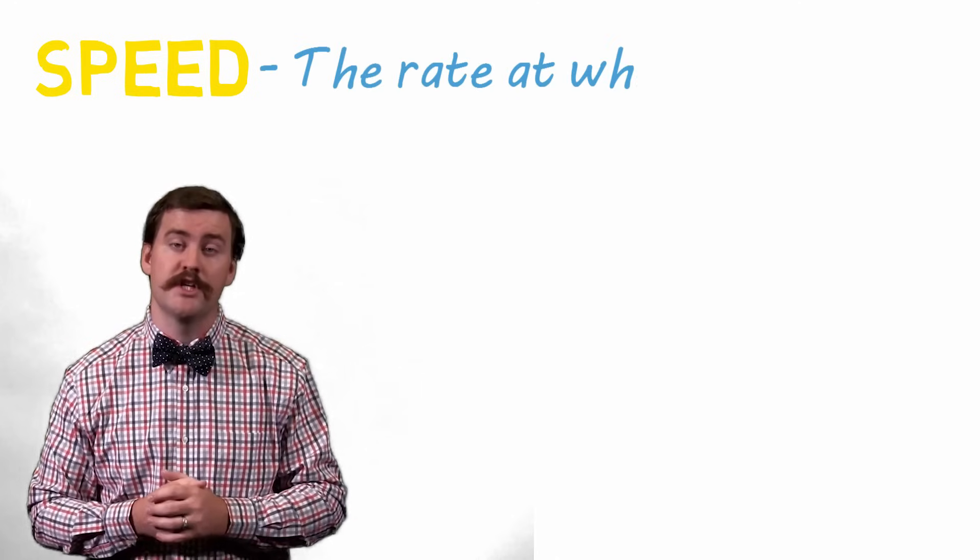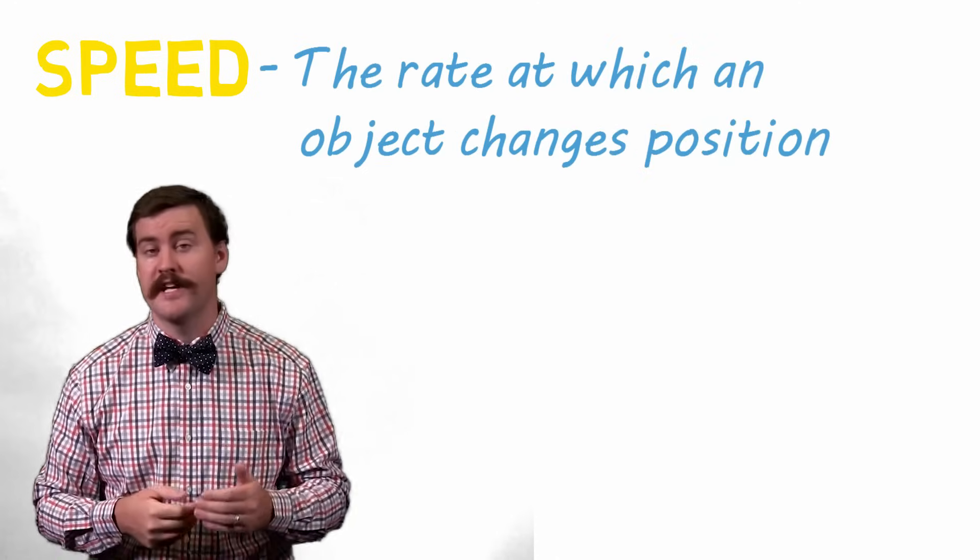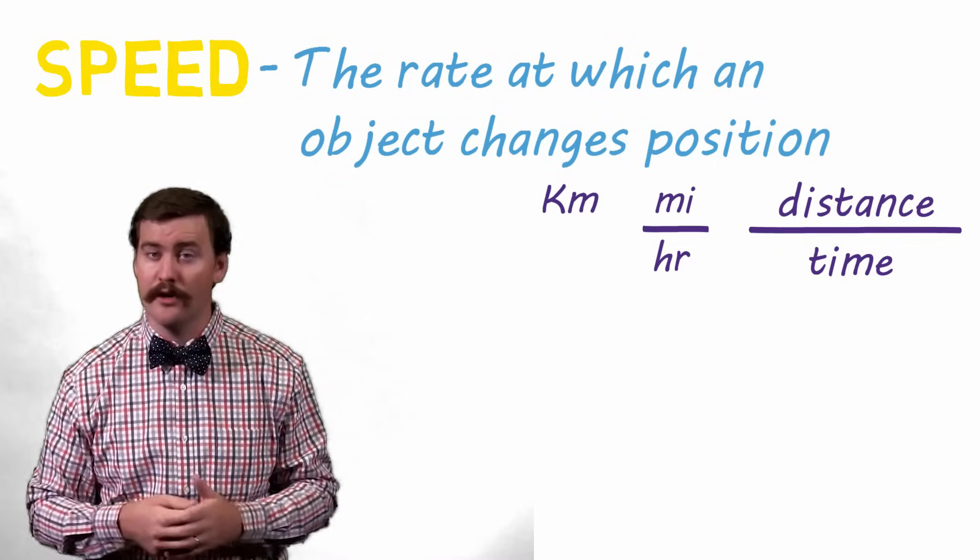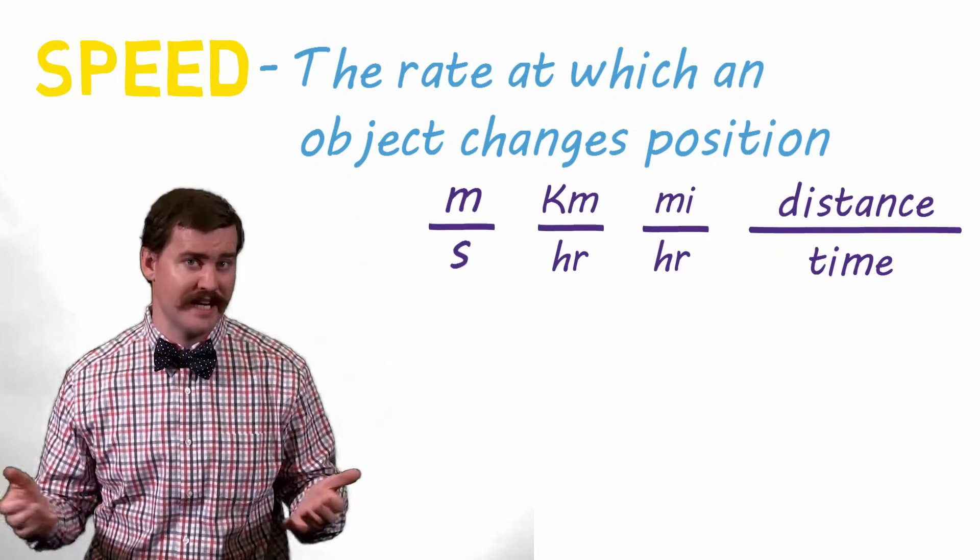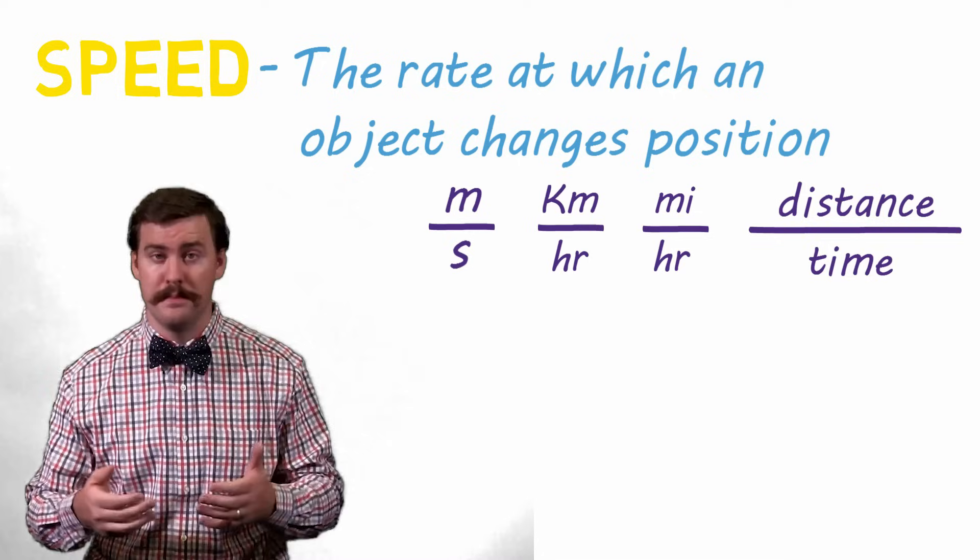Speed is the rate at which something changes its position. It's represented as distance over time. Miles per hour, kilometers per hour, meters per second, these are all examples of the units for speed.